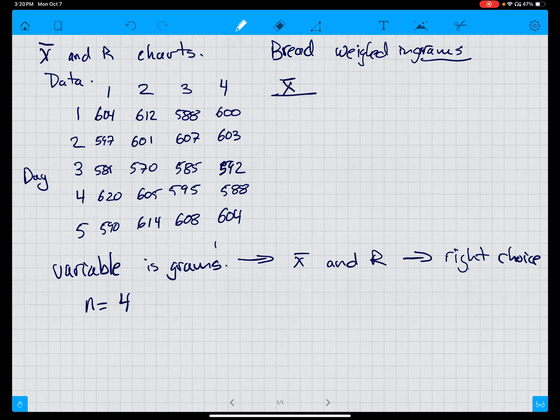X-bar is the average of 604, 612, 588, and 600, and that is 601. 597, 601, 607, 603, that is 602.